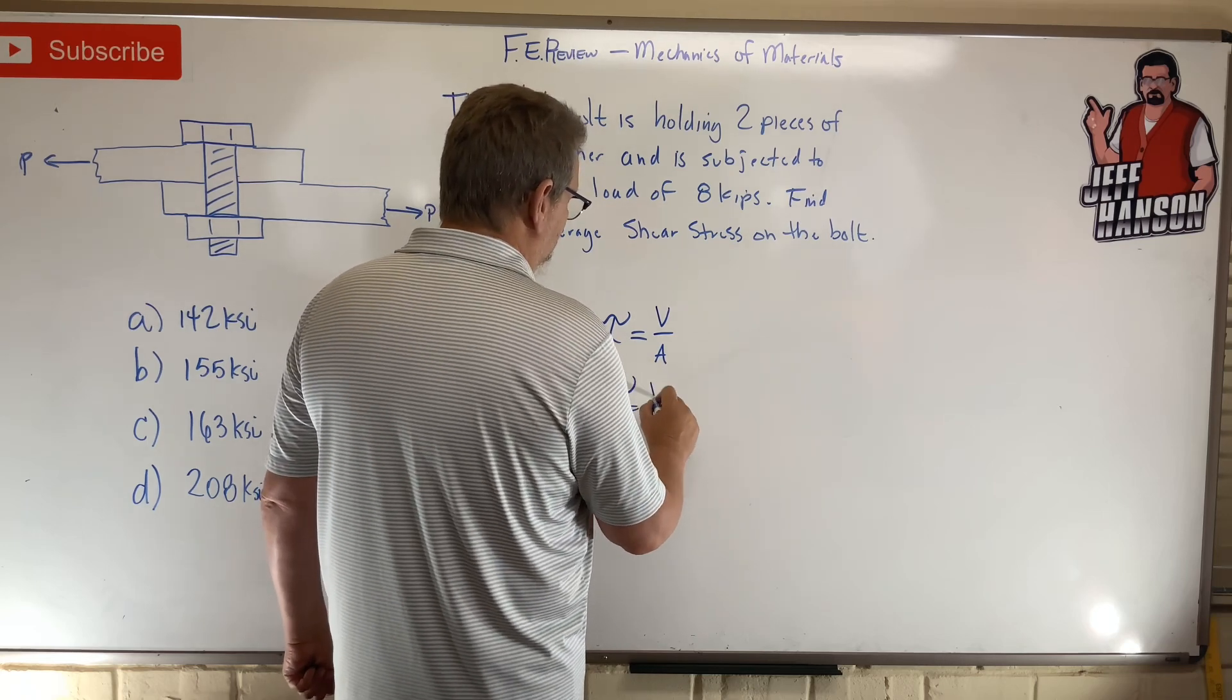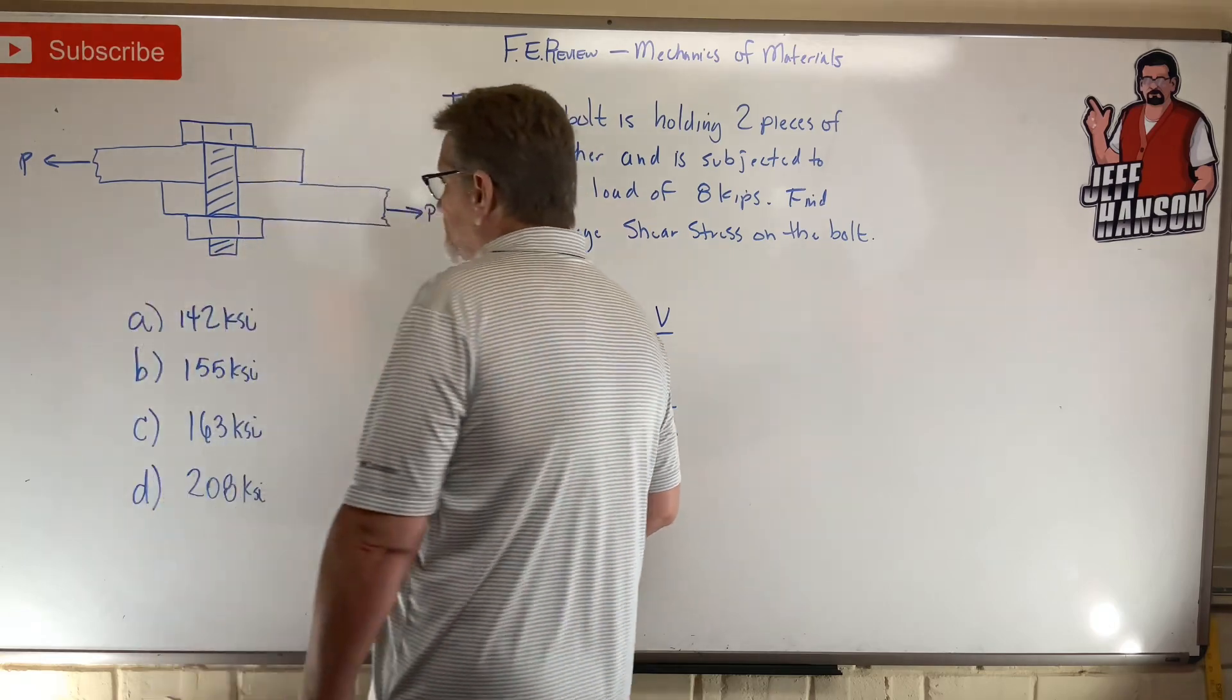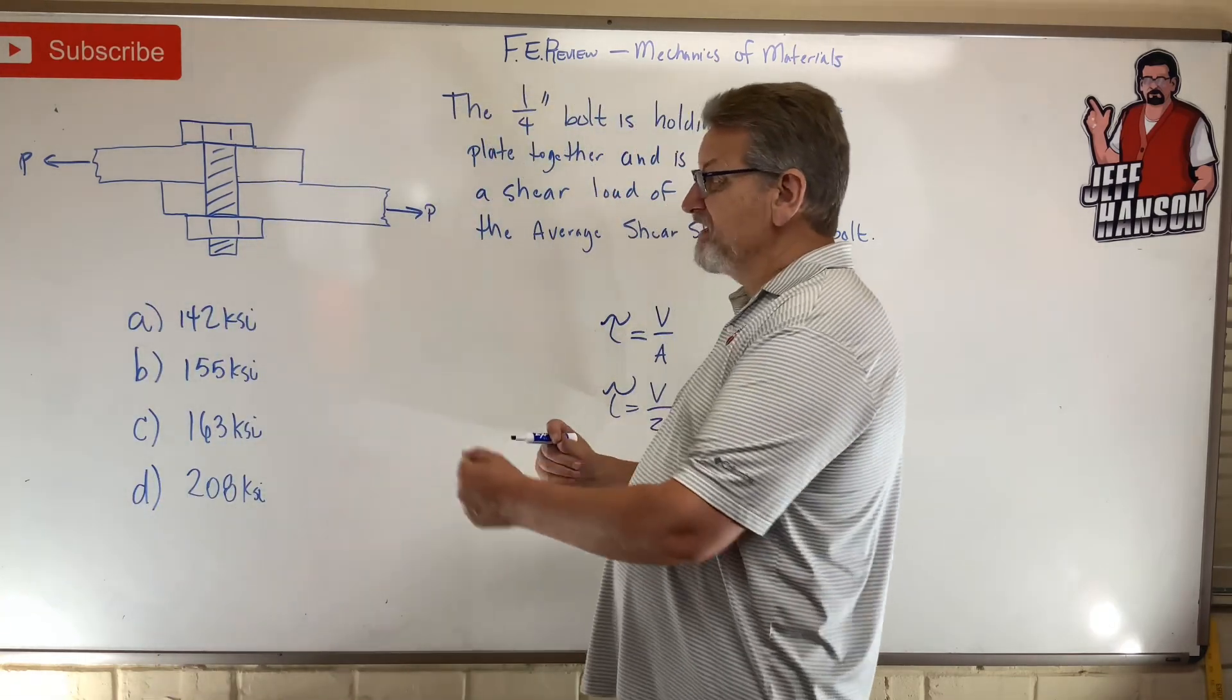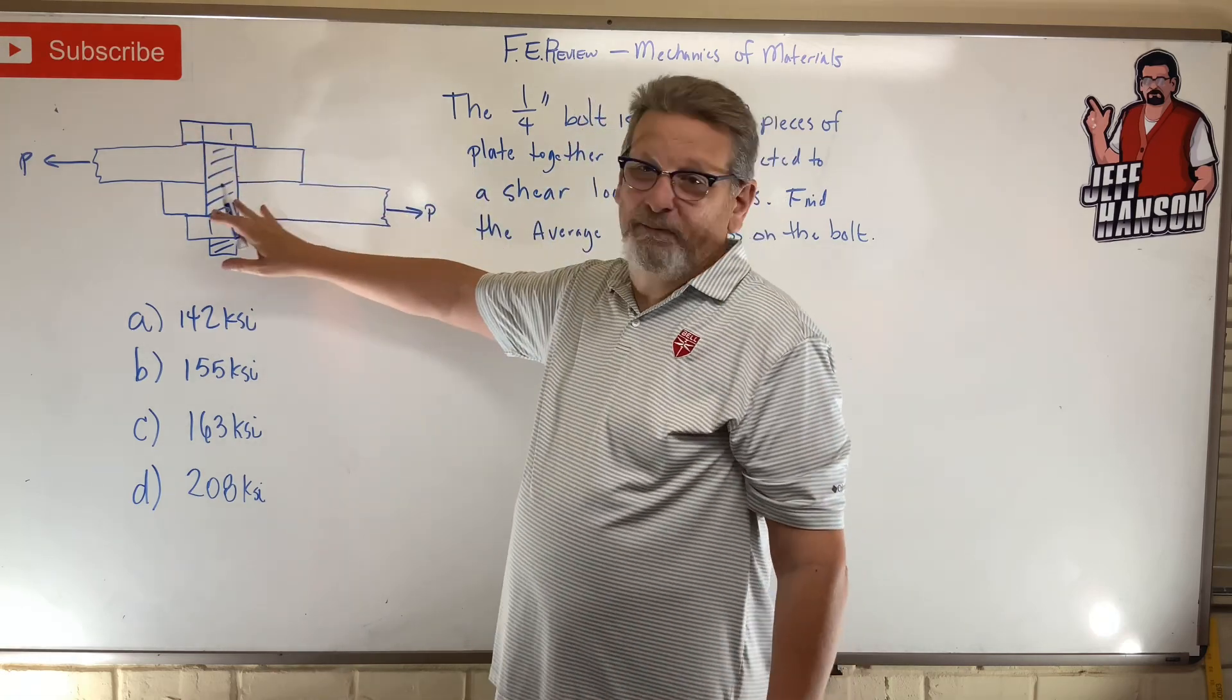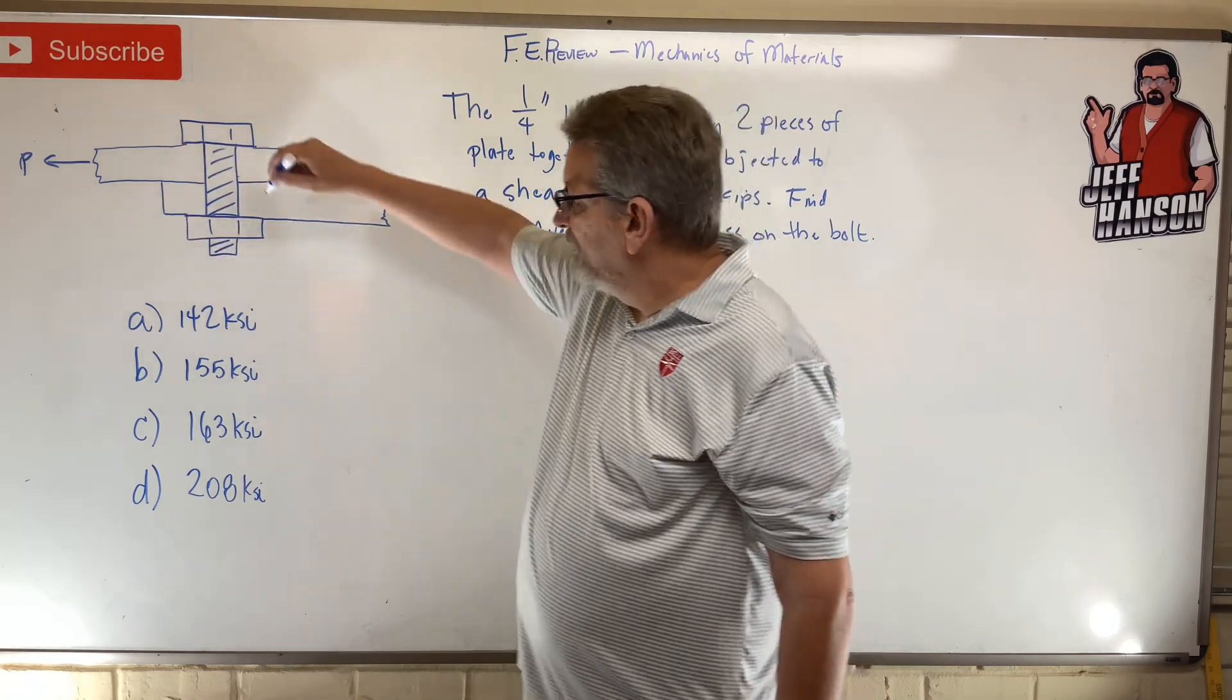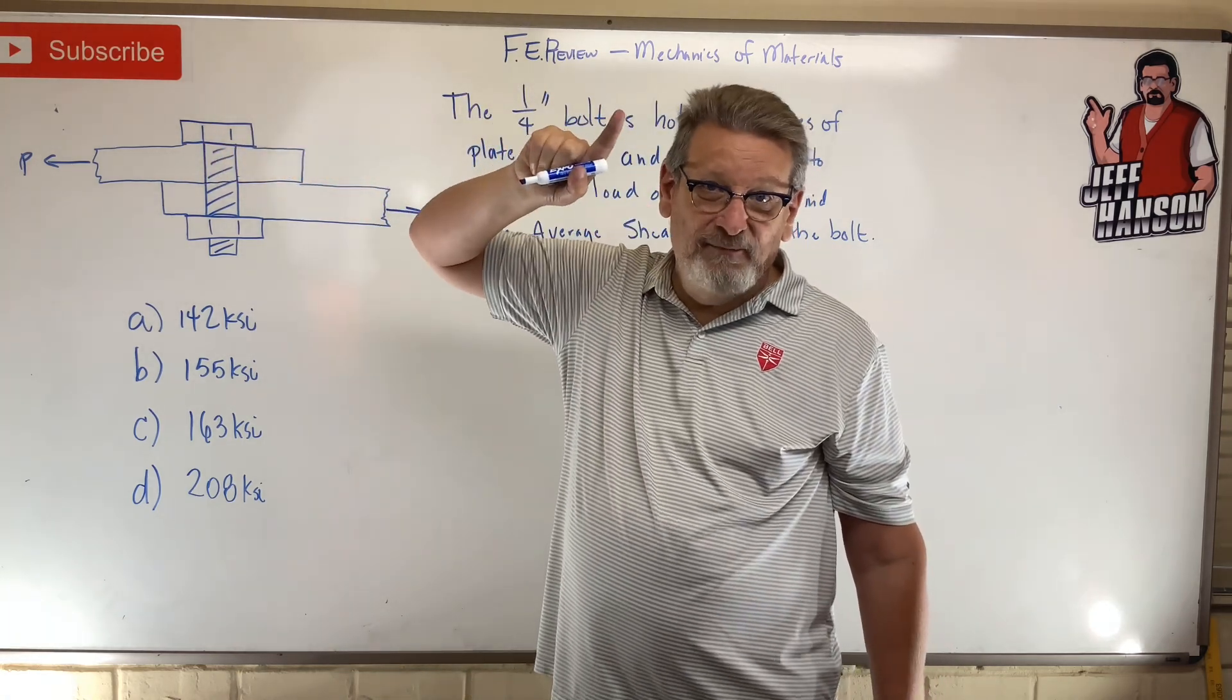Or is it double shear? It kind of looks double, there's two plates and two things pulling. But no, if I pull one and I pull the other, how many times do I have to pull that bolt in half to make it fail? I just gotta rip it right there one time. Single shear.